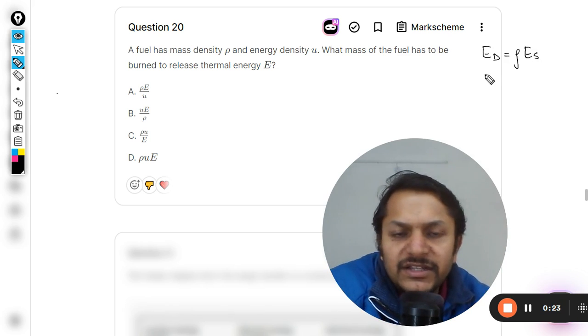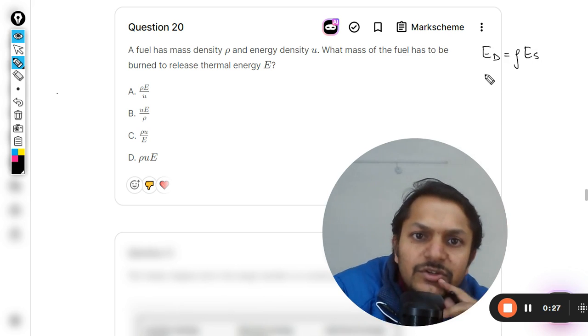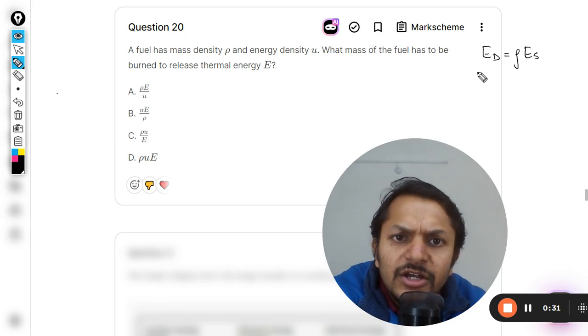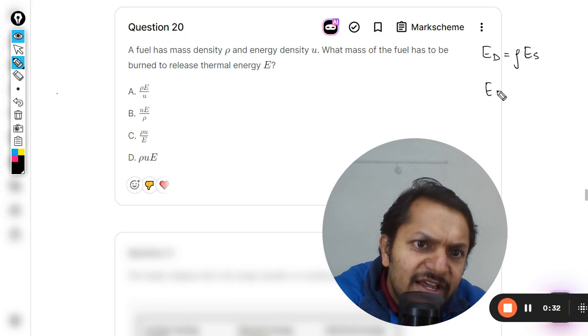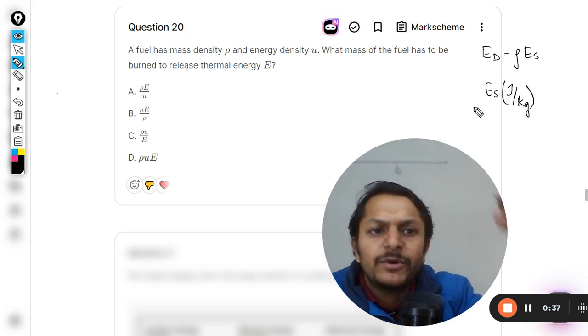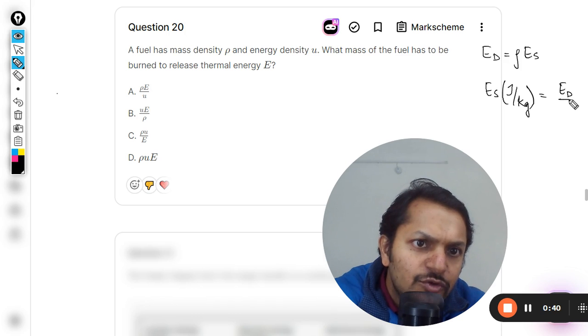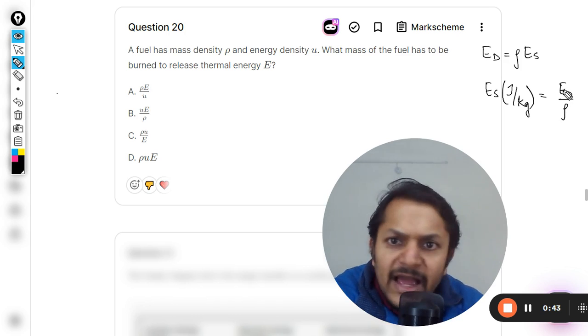So the specific energy with the unit joule per kilogram - like how much energy will be produced by burning one kilogram of fuel - that will be equal to Ed divided by ρ. And Ed is the energy density which is u, so you can just write it as u by ρ. So this is the specific energy of the fuel.